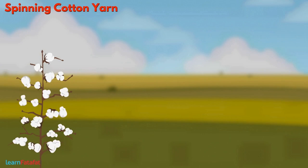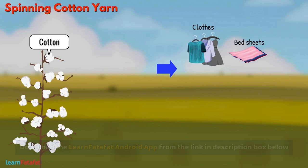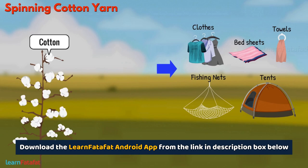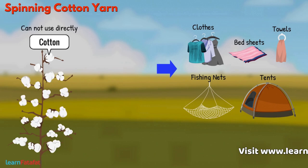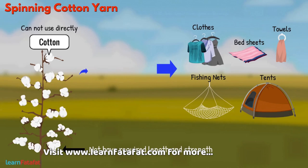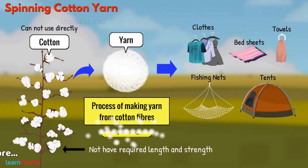We have a variety of things made of cotton — for example, clothes, bedsheets, towels, fishing nets, tents, etc. In order to make these things, we cannot use cotton fibers directly, because they do not have the required length and strength. We need to convert cotton fibers into yarn. The process of making yarn from cotton fibers is called spinning.